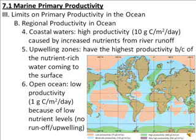These high-productivity upwelling zones include off the coast of California, off the coast of South America — in particular near Peru — and also South Africa. The open ocean has relatively low productivity because of low nutrient levels, simply because there are no rivers running into this part of the ocean and no upwelling to bring nutrients from the depths.